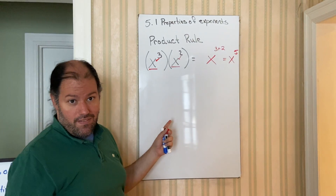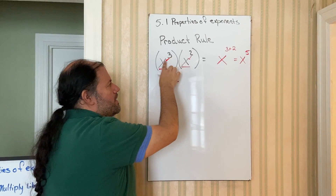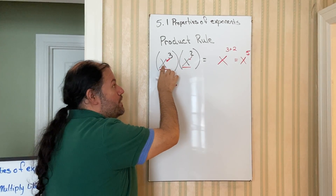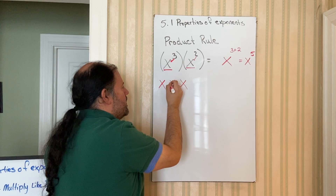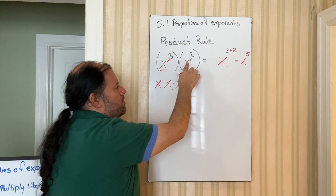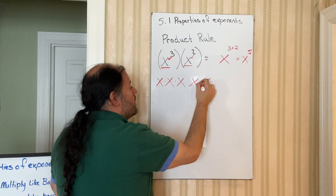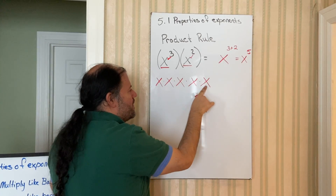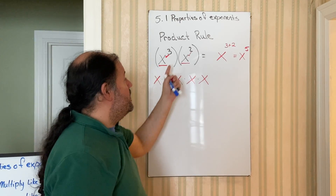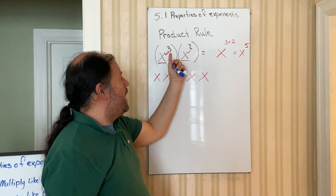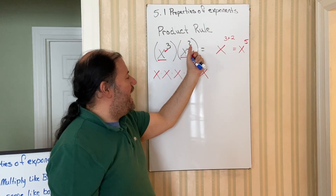How does this work? If I write it in exponential format, this 3 applies to the x, meaning I write this base out three times: x, x, x. This 2 applies to this base of x, meaning I write that base out two times: x, x. When you count how many x's there are — one, two, three, four, five — that's how we get x to the fifth. Even though this is a multiplication symbol, you do not multiply the exponents. The product rule says when you have the same base, you always add exponents.